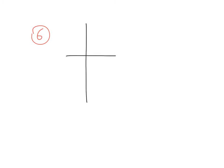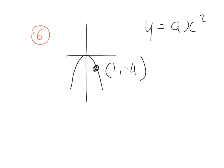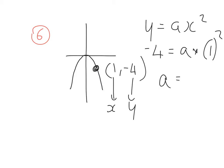Example 6 — this time we have a parabola that's been inverted, turned upside down. It goes through (1, -4) and y equals ax squared; find a. Where I see x, replace it with 1; where I see y, replace it with -4. So -4 equals a times 1 squared, which is 1, giving a equal to -4.